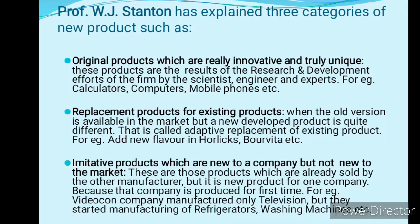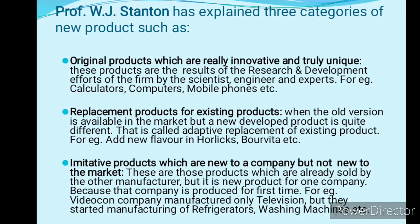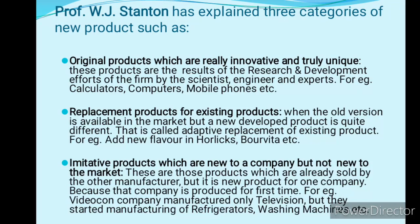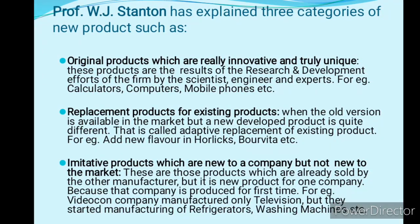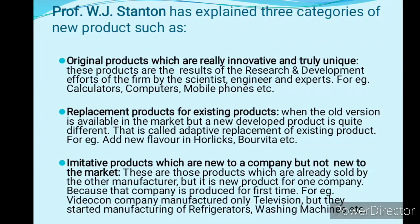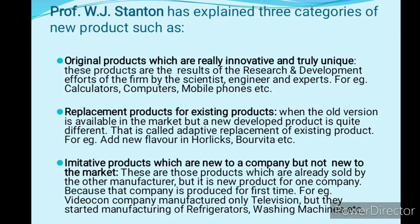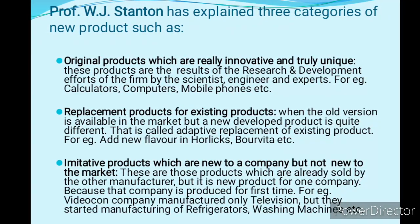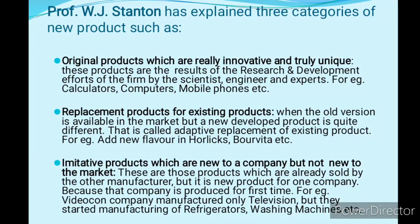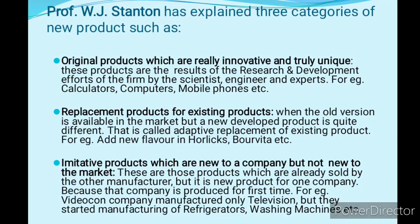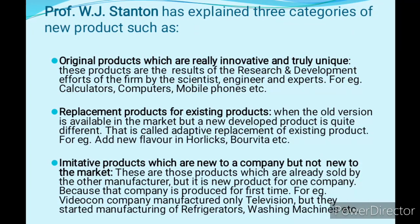The second category is replacement product for an existing product. An old version is already available in the market, but unique and different characteristics are introduced to create a new version. For example, adding flavor to Horlicks, Borbita, or adding flavor to Nescafe coffee — these are examples of replacement products for existing products.